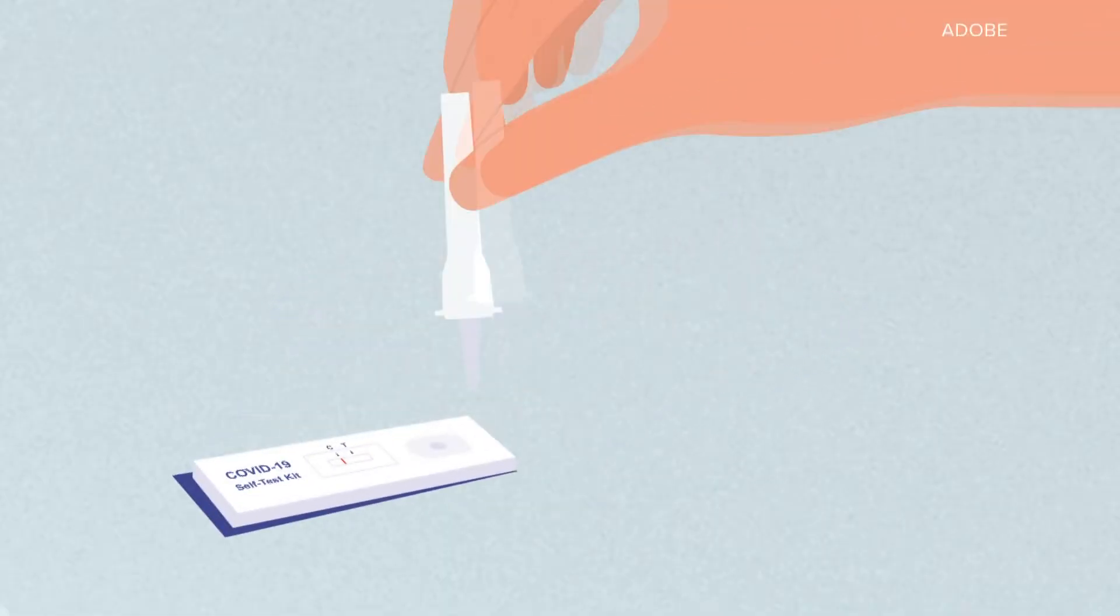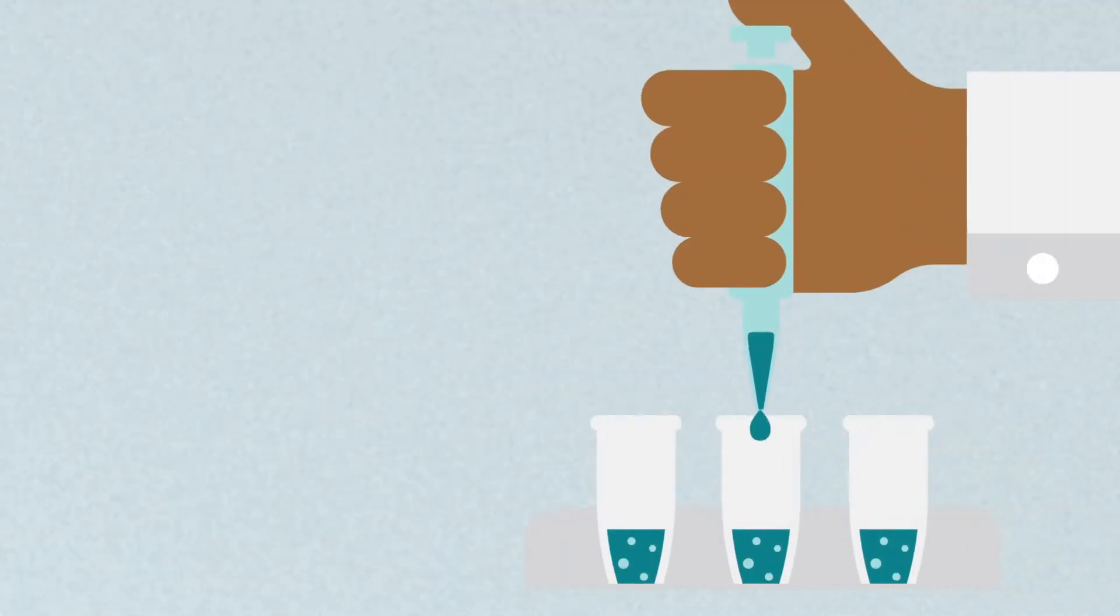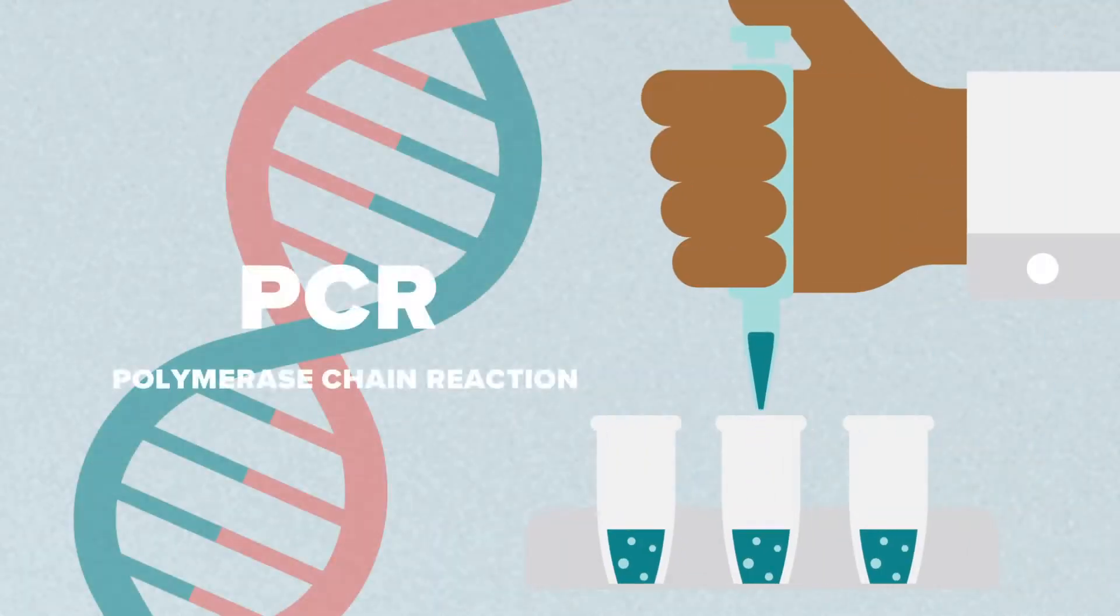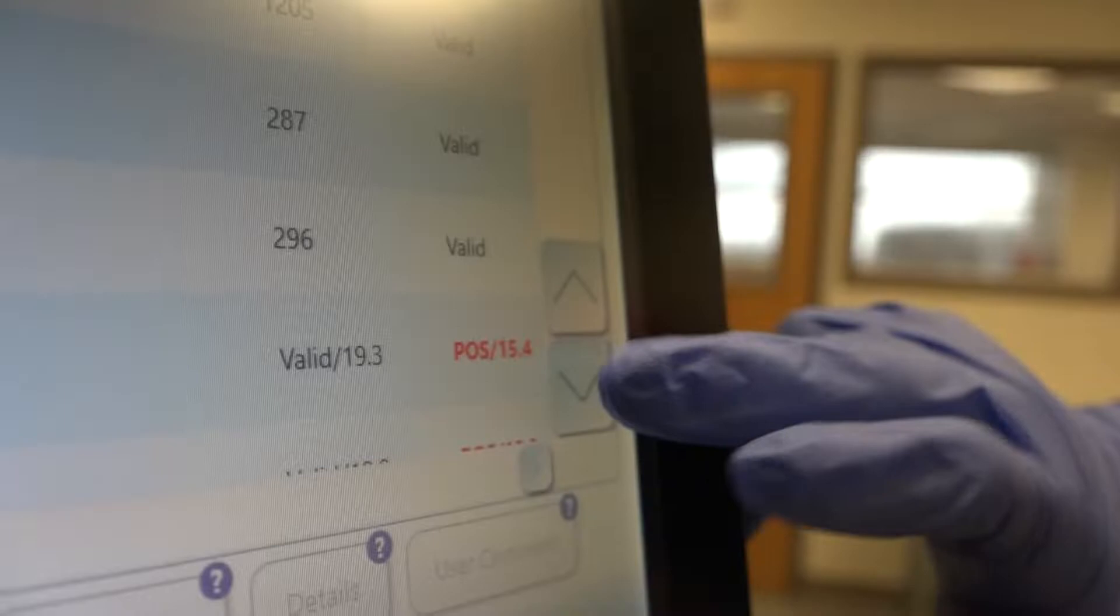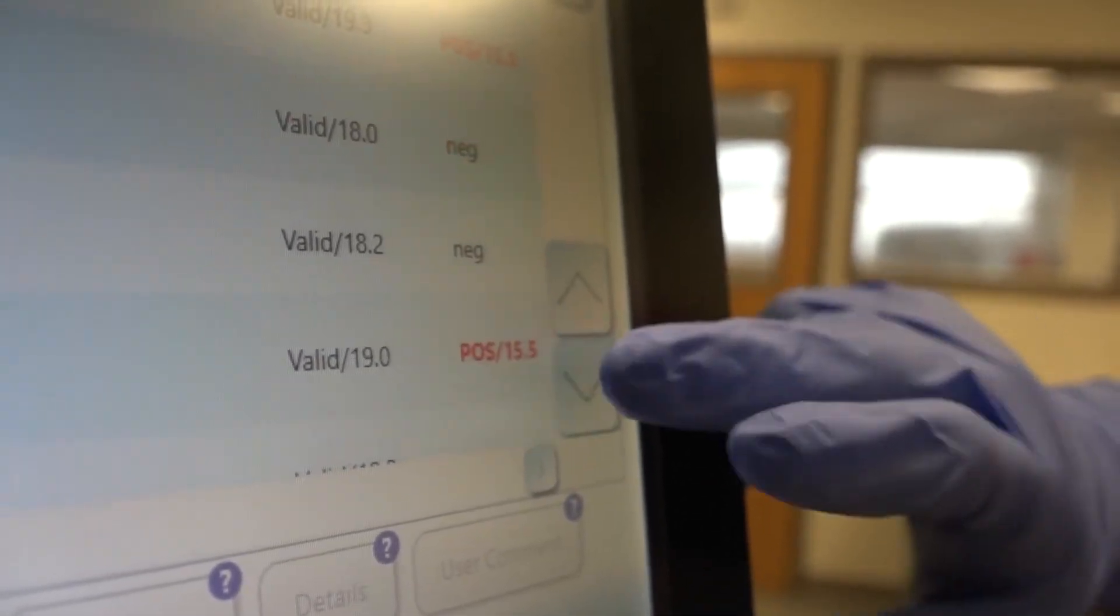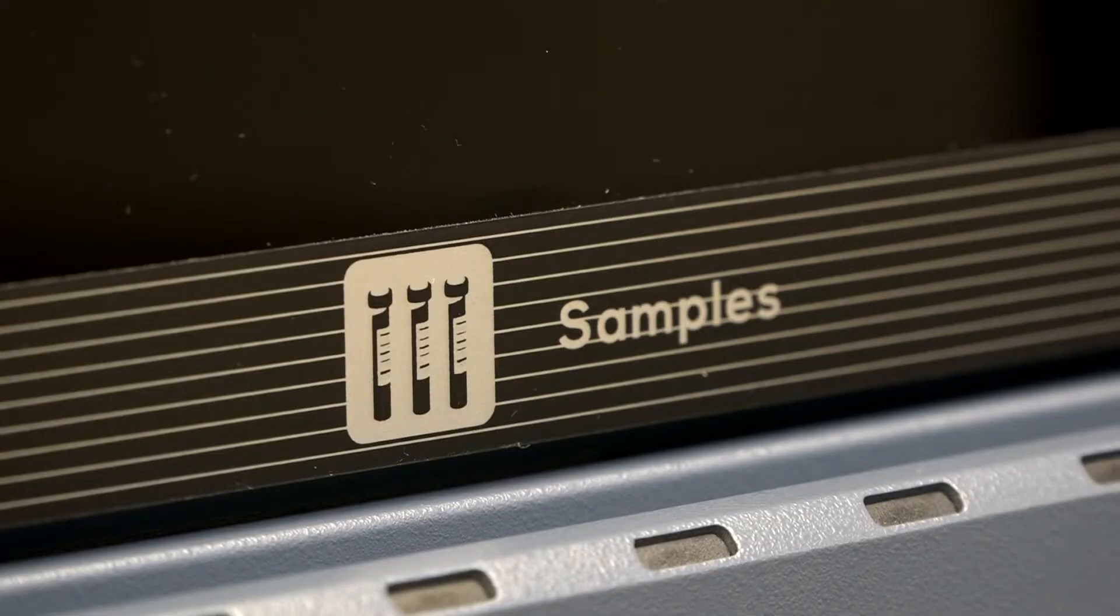Rapid antigen tests require a certain amount of COVID-19 in your system to work. Labs like this run PCR tests or polymerase chain reaction tests. Considered the gold standard, it means reading the sample or specimen more closely.